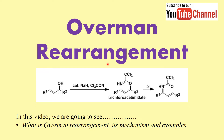Welcome everyone to a new video. In this video we are going to talk about an interesting rearrangement reaction known as the Overman rearrangement. Basically, what happens in this reaction is we convert an allylic alcohol into an allylic trichloroacetamide, and the key intermediate involved is the trichloroacetamide intermediate.